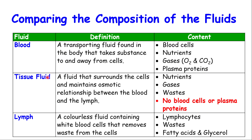The tissue fluid is a fluid that surrounds the cells and maintains the osmotic relationship between the blood and the lymph. In other words, the tissue fluid is what connects the blood and the lymph — it sits between both and is very important to the functioning of the lymphatic system. The contents of tissue fluid include nutrients and gases such as oxygen and carbon dioxide, similar to what is found in the blood.